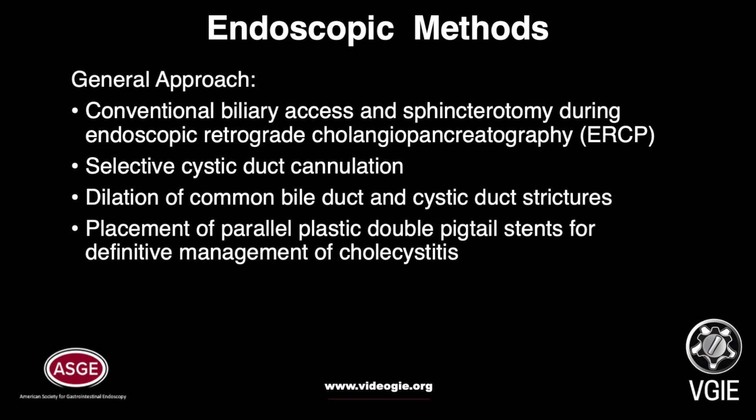The general steps for endoscopic Transpapillary Gallbladder Drainage include conventional biliary access and sphincterotomy during ERCP, followed by selective cystic duct cannulation, dilation of the common bile duct and cystic duct strictures, and placement of parallel double-pigtail plastic stents for definitive management of cholecystitis. In this video, we will outline our general approach to the procedure as well as highlight useful techniques for successful completion.